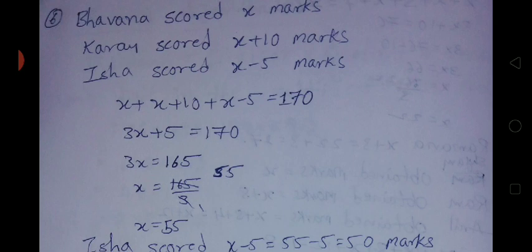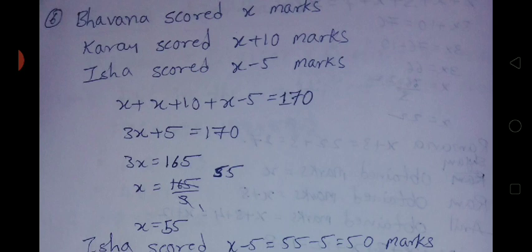Isha got five marks less than Bhavna. The three of them got a total of 170. Then what are the marks obtained by Isha? The dependent one is Bhavna, so Bhavna's score is X marks. Karan got 10 marks more than Bhavna, so Karan's score is X plus 10. Isha scored 5 marks less than Bhavna, so Isha's score is X minus 5.